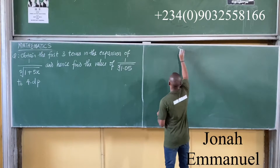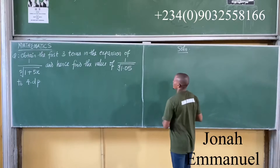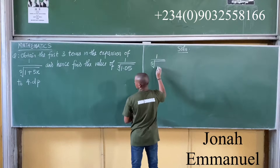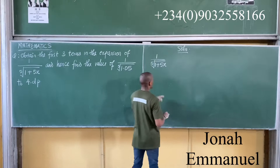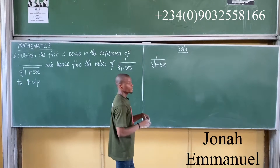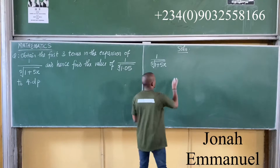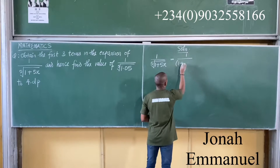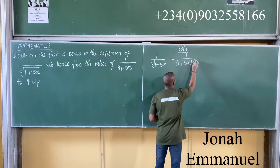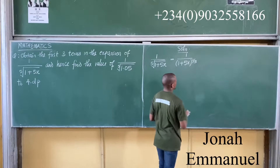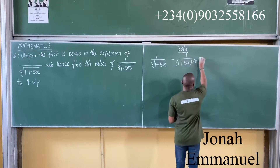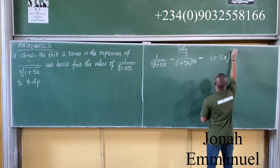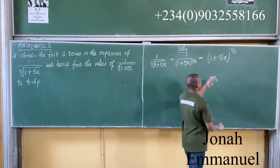Solution to this: my task would be, first of all, to express this in index form. I'm given 1 all over the fifth root of 1 plus 5x. This is equal to 1 all over (1+5x) to the power 1/5. And better still, this can be written as (1+5x) to the power minus 1/5. So I have this in index form.